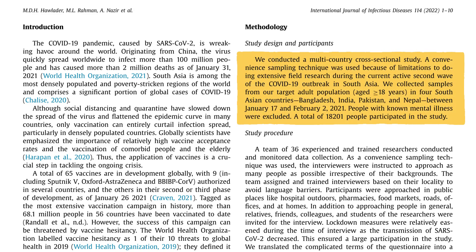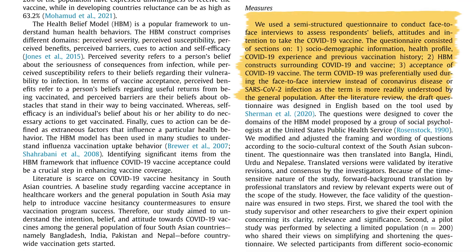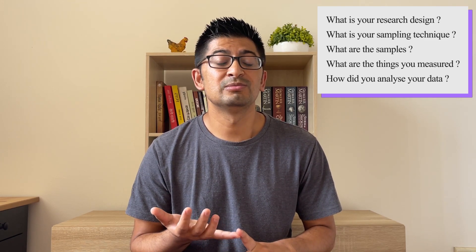They have mentioned their number of samples and sampling approach in this sentence, and what things they measured in another paragraph. In the statistical analysis section, they explain how they analyzed the collected data. So the four things to remember in methods are: research design, sampling technique and samples, what you measured, and how you analyzed your data.